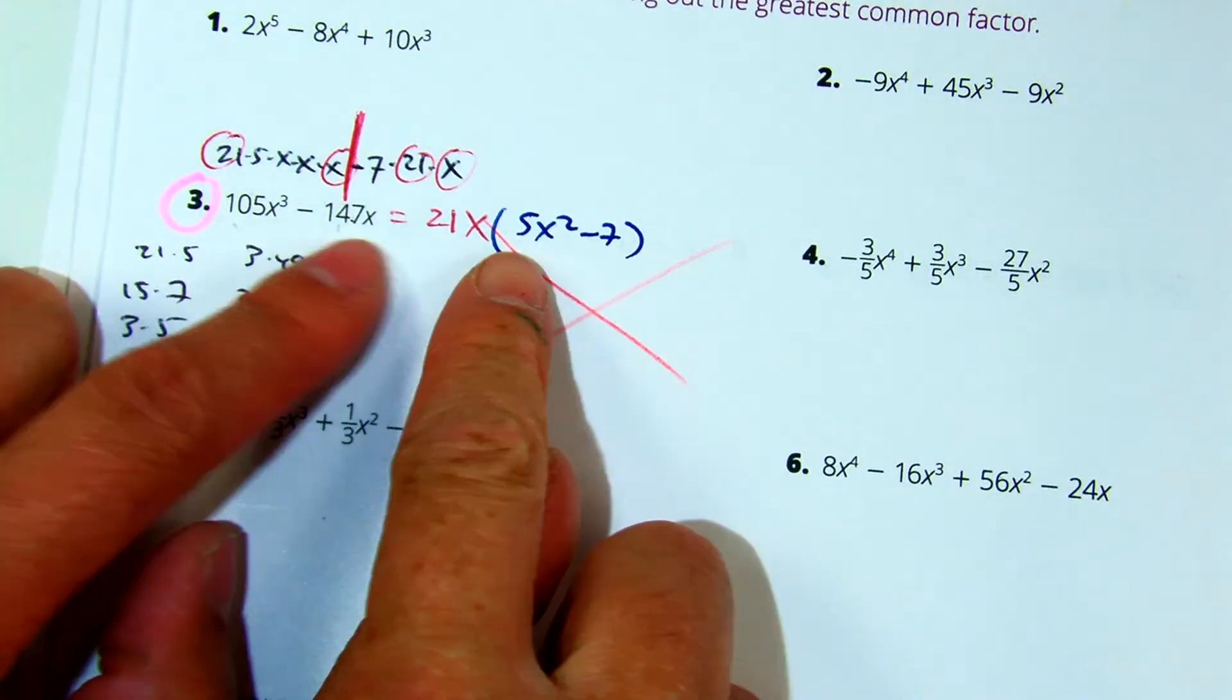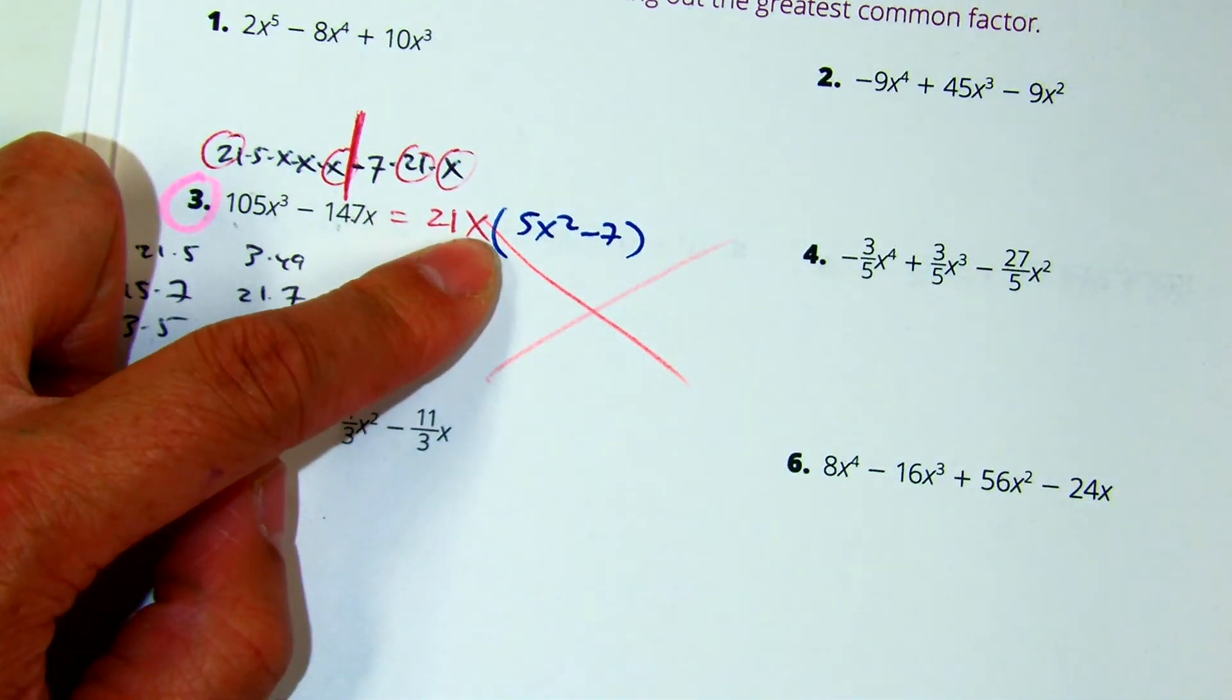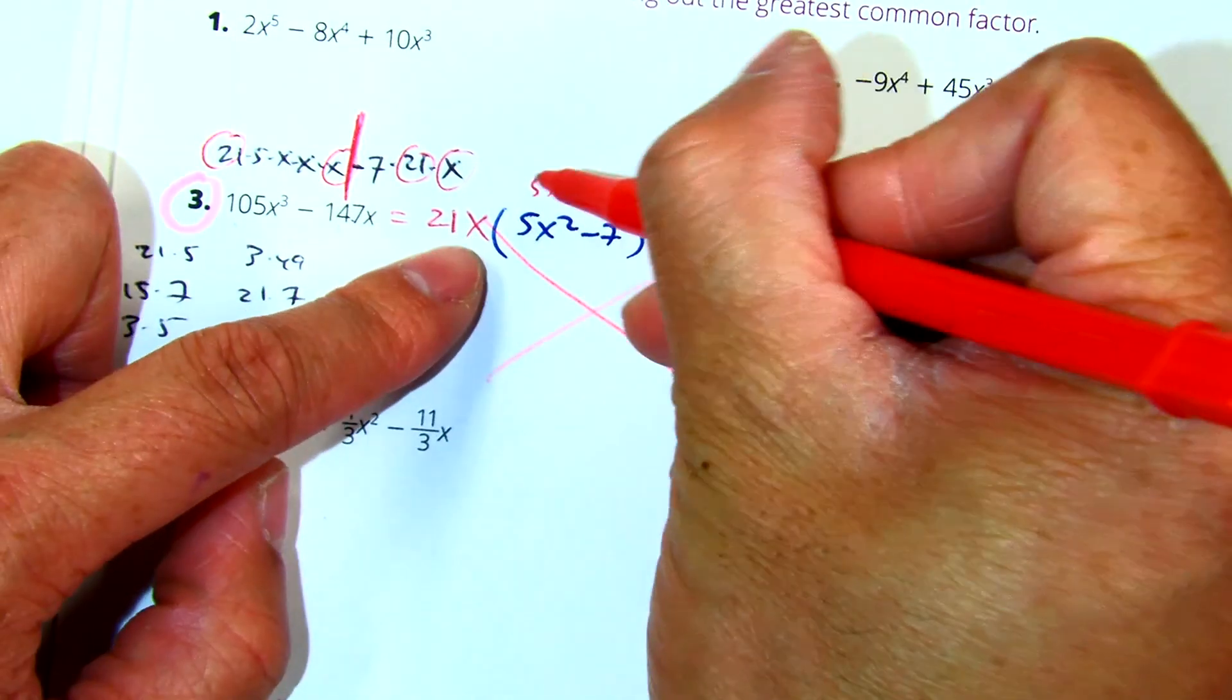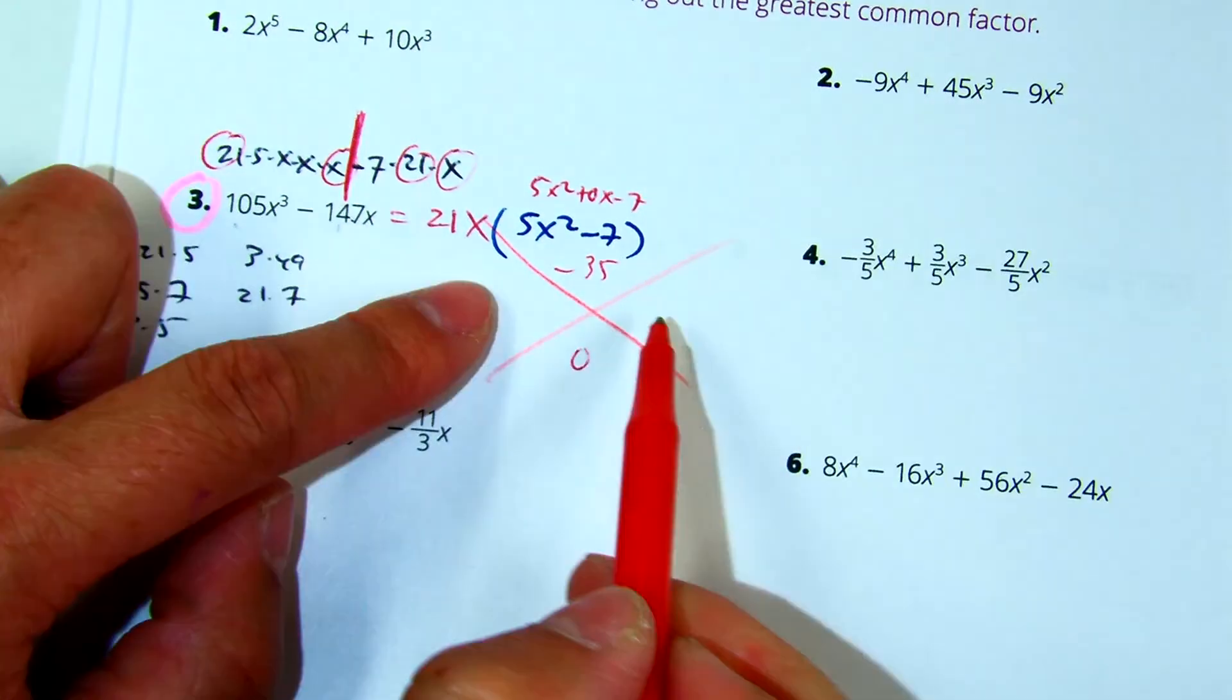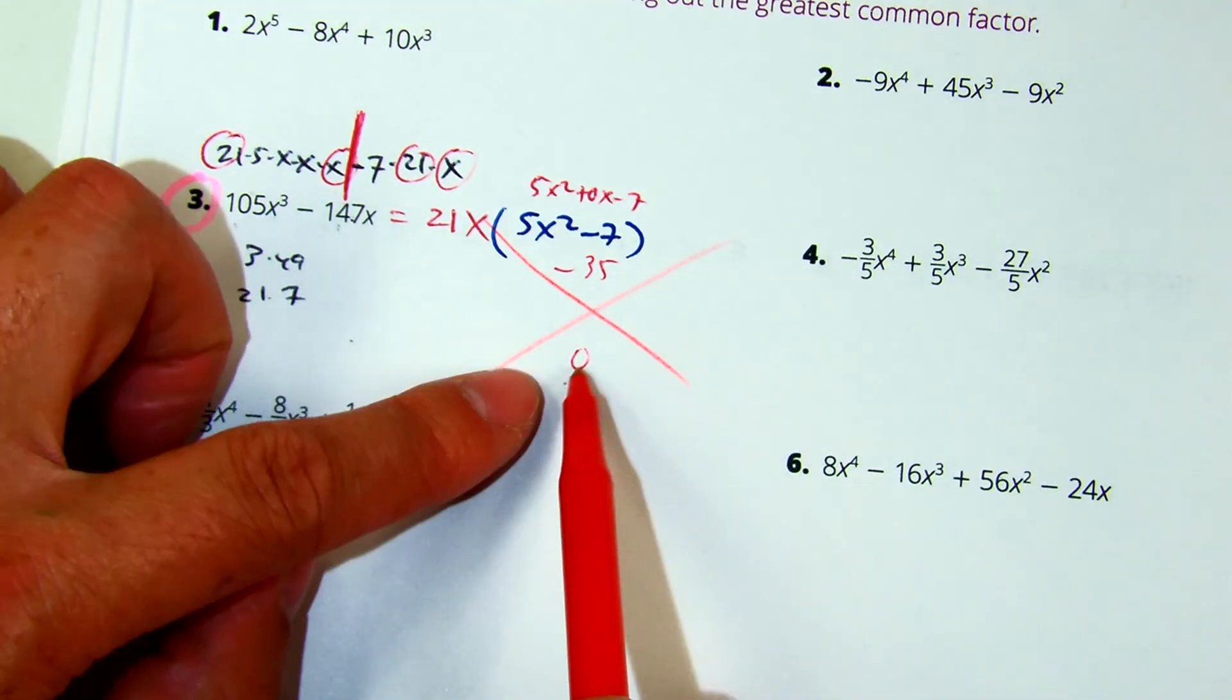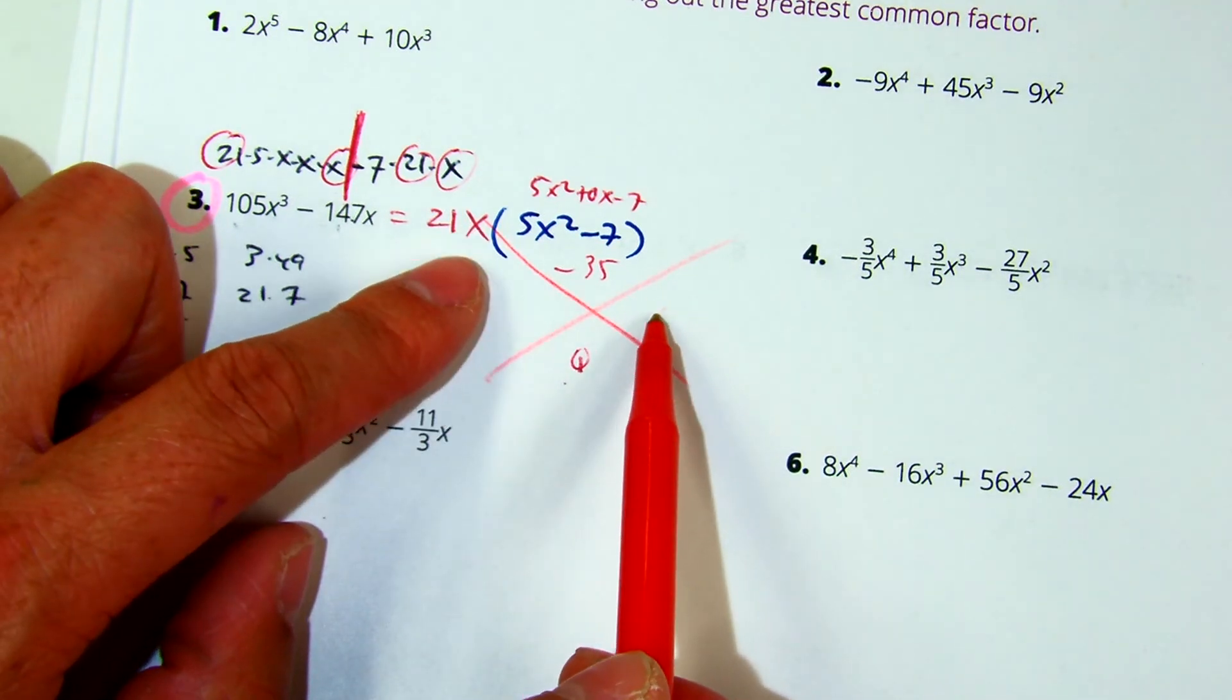You'll notice this one, you're missing a b value. So that's 5x squared plus 0x minus 7. But if I do the x method for this, that would be negative 35 and b value 0. Are there two numbers that multiply to be 35 and add to be 0? No. Now, here's another hint. When you have a 0 here, these have to be the same numbers. But one has to be positive and one has to be negative.